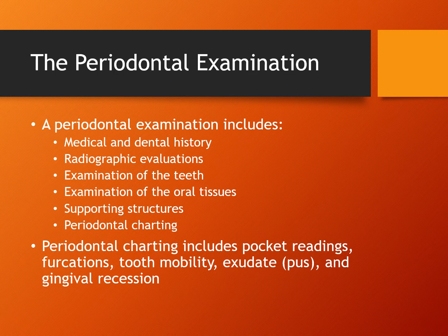A periodontal examination includes many things. It includes a complete medical and dental history. It is very important to note any systemic conditions that a patient might have. Radiographs, especially bite wings, will help the periodontist see any damage to the periodontal structures. The periodontist will then do a complete exam of the teeth, tissues, and supporting structures. During this exam, a periodontal chart will be created, which includes pocket readings, furcations — the points at which the roots of a multi-root tooth diverge — tooth mobility, existence of pus, and gingival recession.